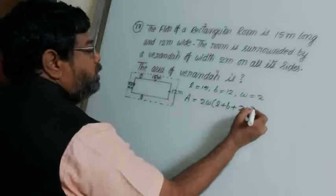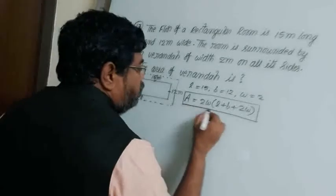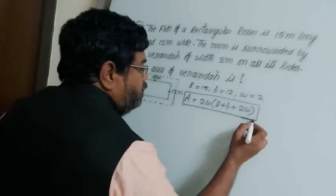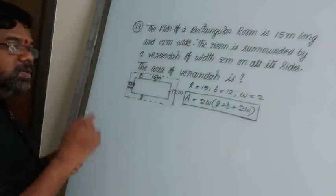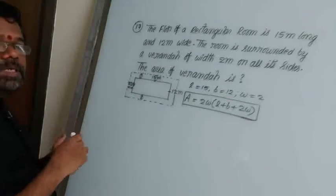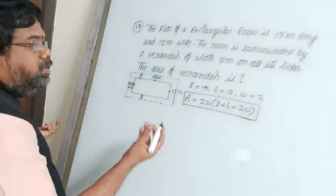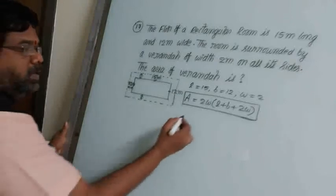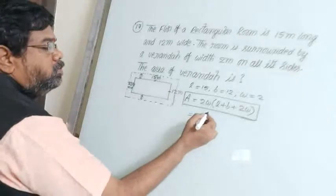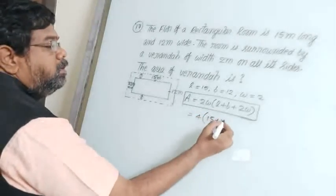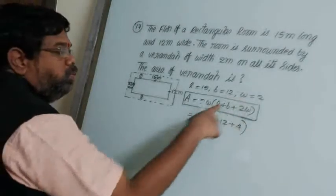This formula was already discussed in the first Rectangle video keynotes. Now applying it: 2W = 2 × 2 = 4. Then calculate L + B + 2W = 15 + 12 + 4 = 31.